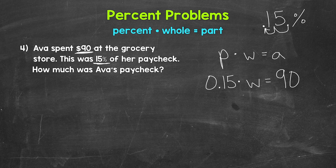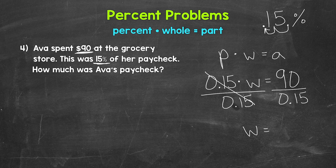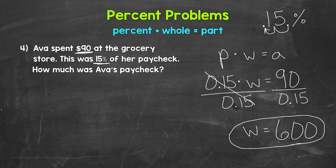We just have a one-step equation. We need to isolate the variable W. W is being multiplied by 15 hundredths, so we need the inverse operation — division. Divide both sides of the equation by 0.15. On the left, these cancel each other out and W is now isolated. On the right, we have 90 divided by 0.15, which gives us 600. So the whole equals 600. Going back to the original question — how much was Ava's paycheck? Ava's paycheck was $600.